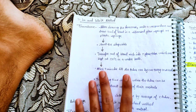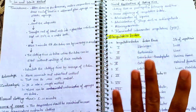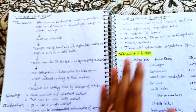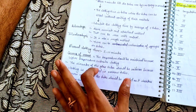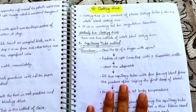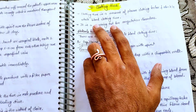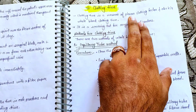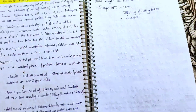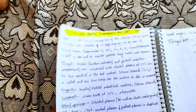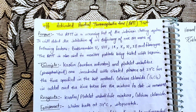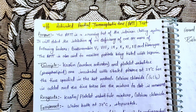We have studied coagulation, coagulation factors, clinical applications, and sources of errors. We have also studied the Capillary Tube Method and Lee and White Method for clotting time. Our next topic will be Activated Partial Thromboplastin Time, or APTT test.